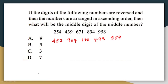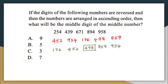After reversing all the numbers, we arrange them in ascending order — smallest to biggest. The order will be: 176, 452, 498, 859, 934. Among these numbers, the one appearing in the middle is 498. The middle digit of that number is 9. The answer is option A: 9.